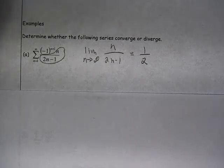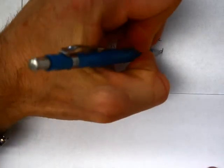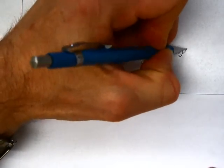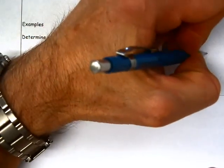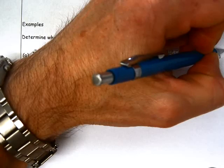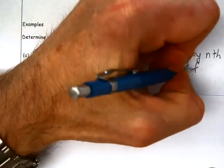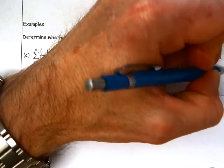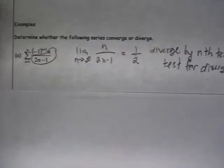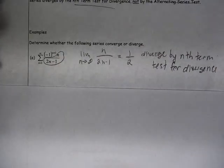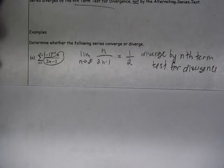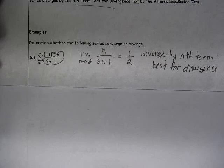So this series is going to diverge by the nth term test for divergence. Those terms, the limit of those terms does not approach 0.